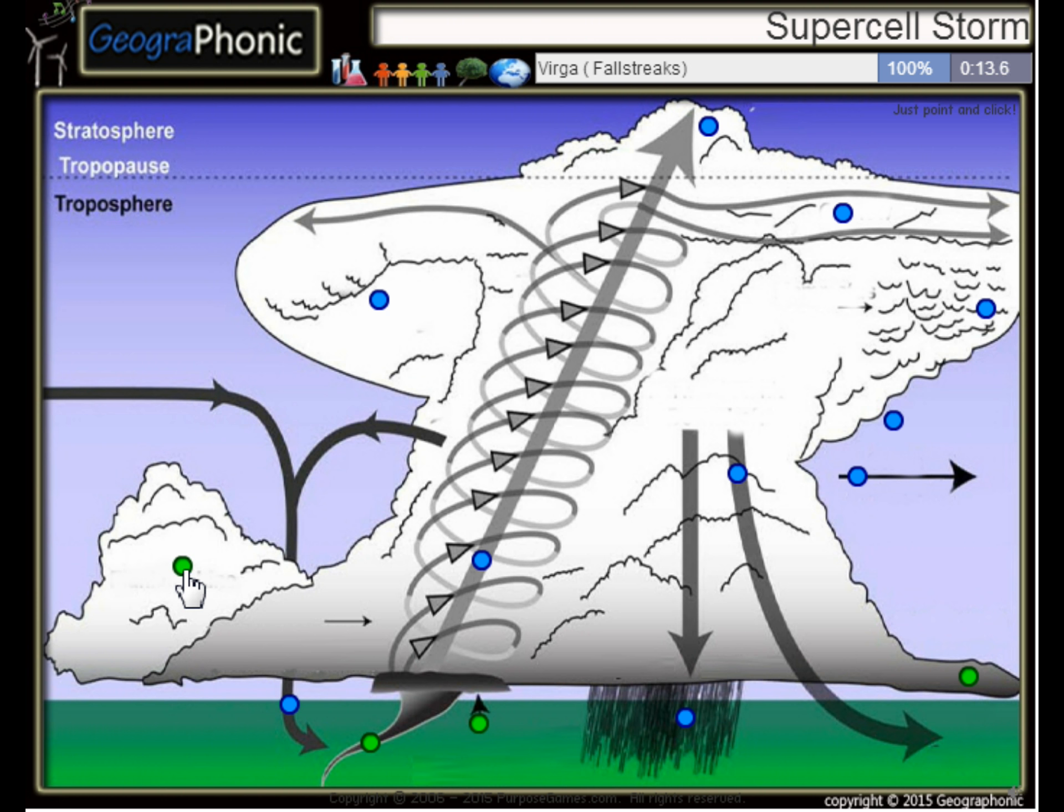This is the flanking line. Here we see virga or fall streaks. This is a heavy rainfall and hail. This is the outflow and this is the mesocycle.